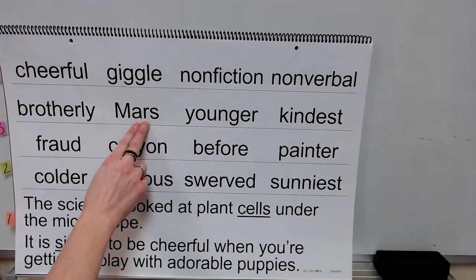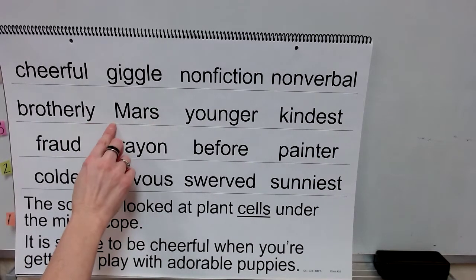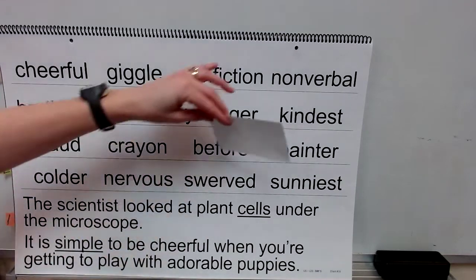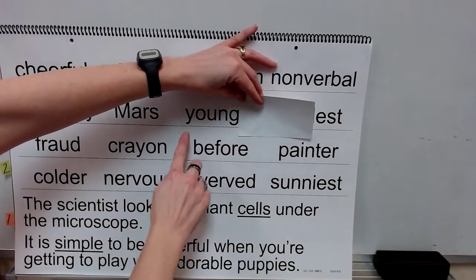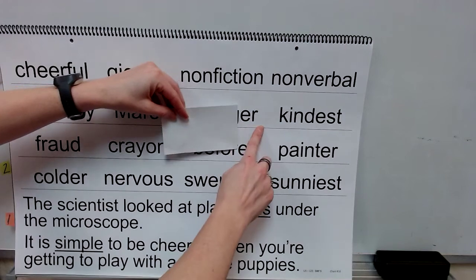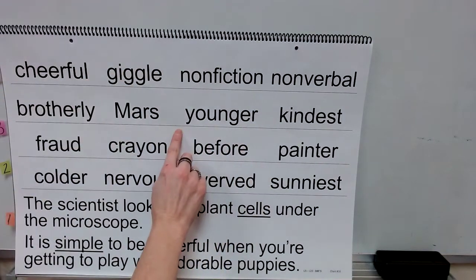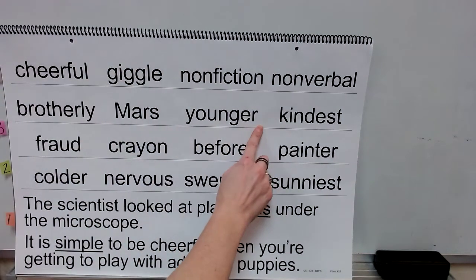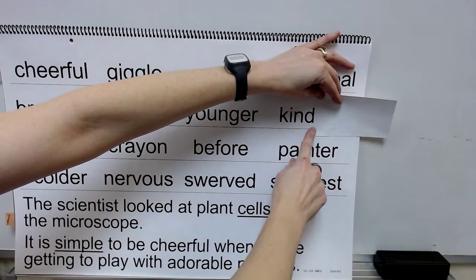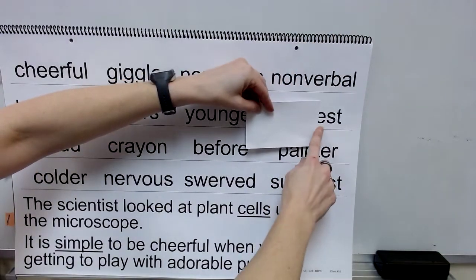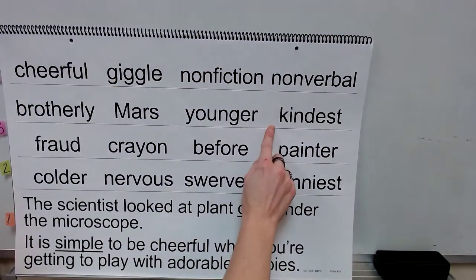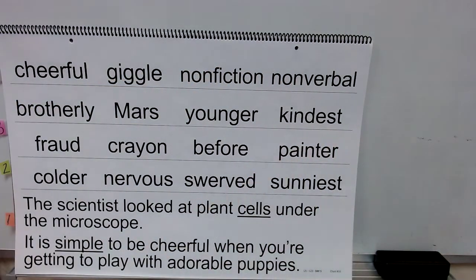Sound: r. Word: Mars. Base word: young. Suffix: er. Word: younger. Base word: kind. Suffix: est. Word: kindest.